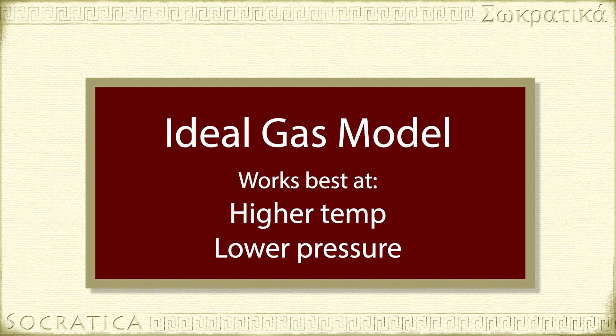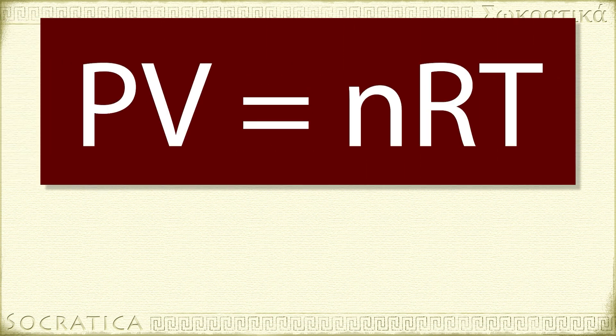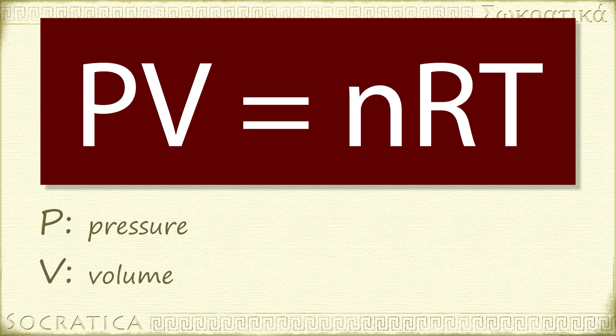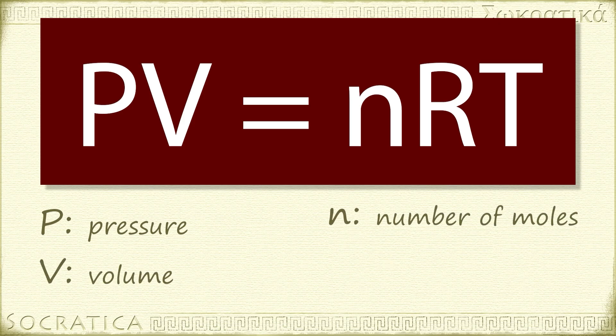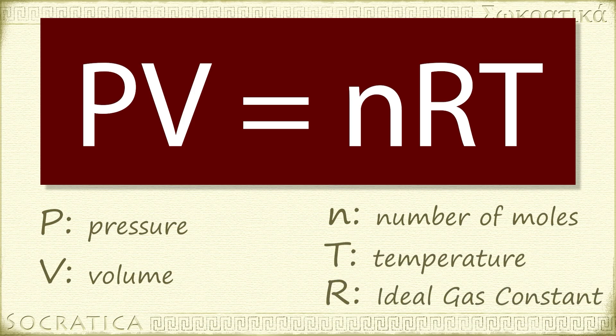The ideal gas law equation is PV equals nRT. P stands for pressure. V stands for volume. N is the number of moles of the gas. T is the temperature. And R is the ideal gas constant, which makes the math work.